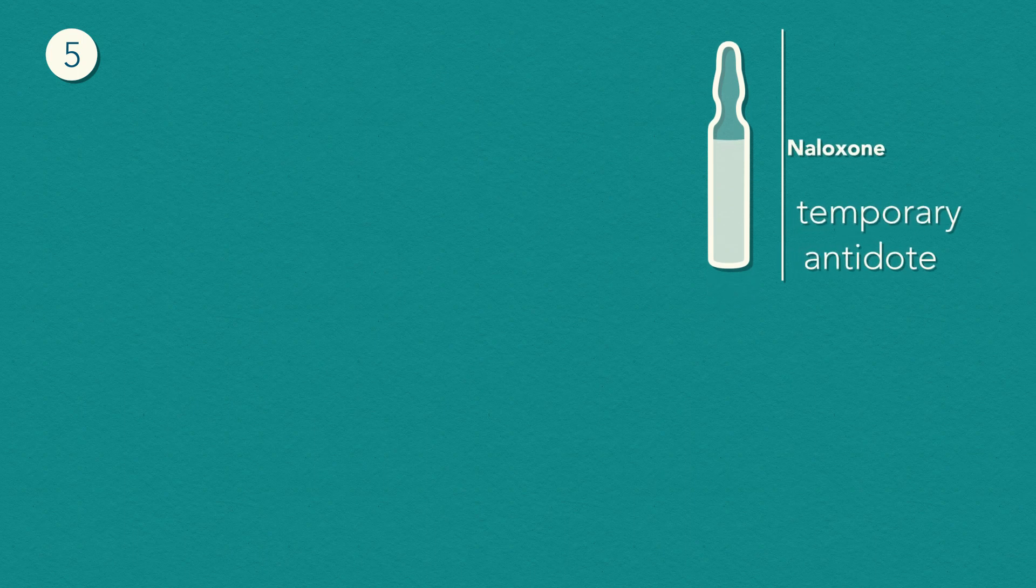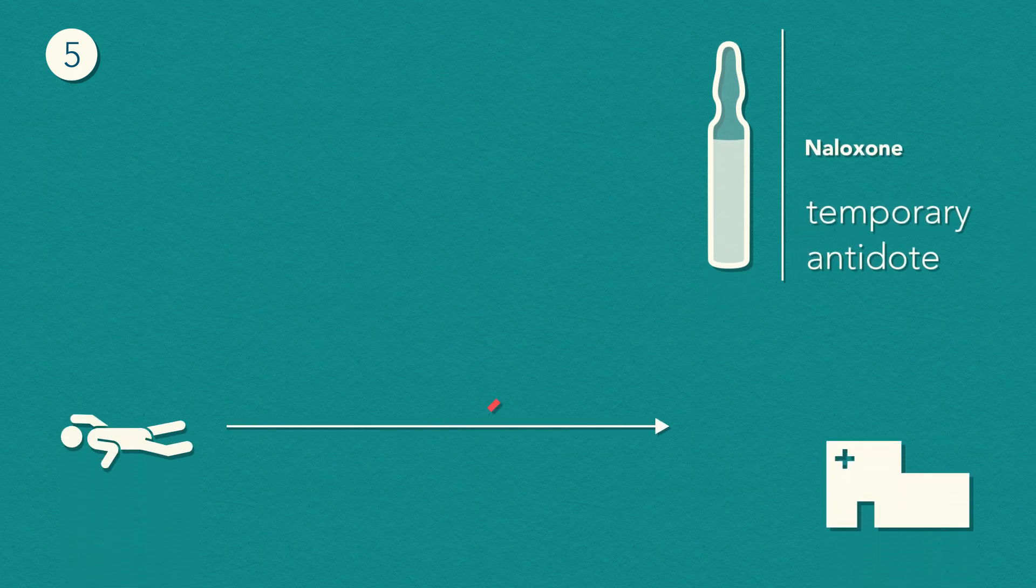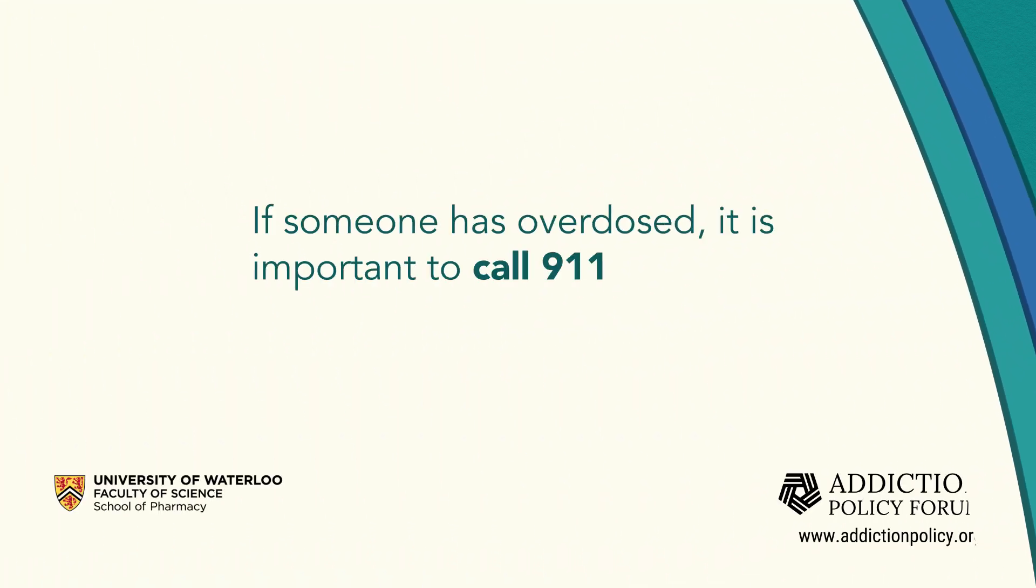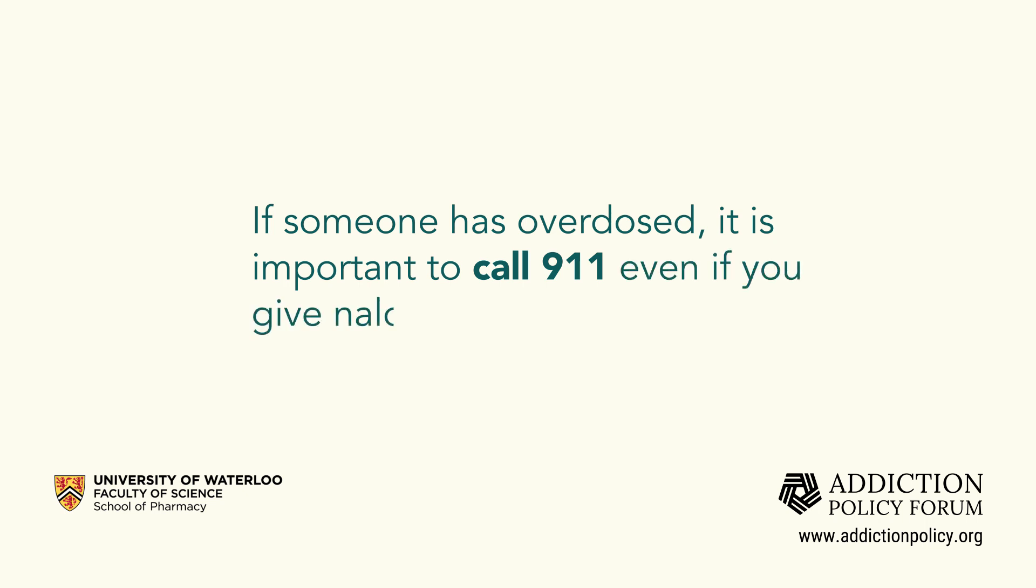And finally, naloxone is a temporary antidote. If the person is not taken to a hospital, they may fall back into the overdose. If someone has overdosed, it is important to call 911 even if you give naloxone.